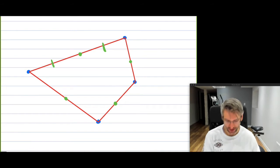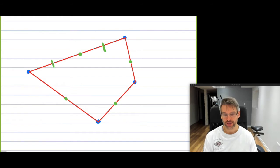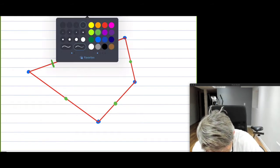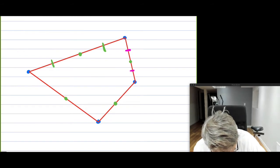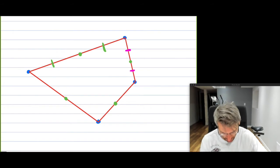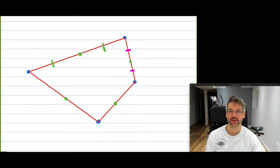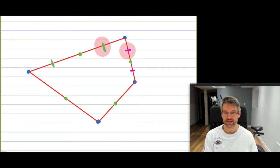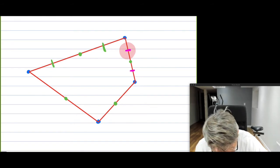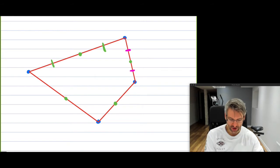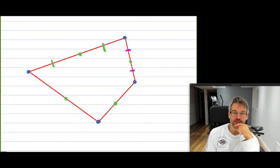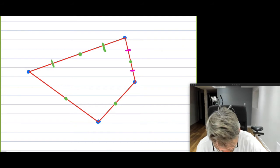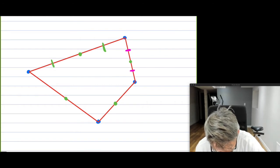Obviously, the halves are not necessarily equal across all sides. What you do have is — I'll change colors to show this — the two pink segments are equal to each other, and the green segments are equal to each other. But that doesn't mean the greens are equal to the pinks. When you split each side in half, those halves are equal within that side, but different sides have different lengths.